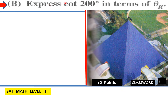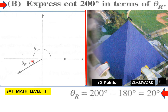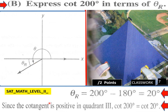Express cotan 200 degrees in terms of theta reference. Here is your 200 degree angle — this is your theta. What would this reference angle be? It would be 200 minus 180, which is a 20 degree reference angle. So 180 plus 20 more equals 200. Since cotan is positive in quadrant 3, cotan 200 equals cotan 20 degrees. X and Y are both negative, so cotan is positive.